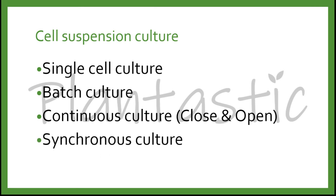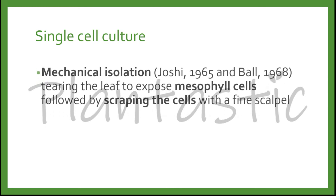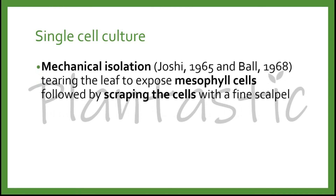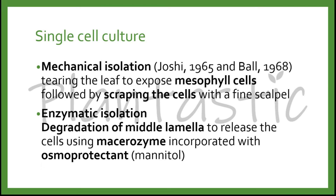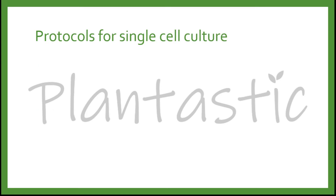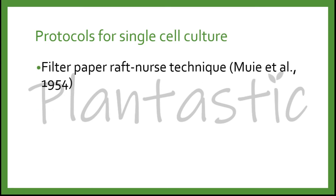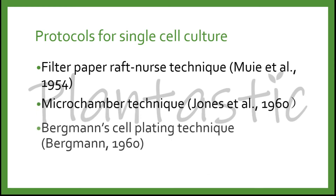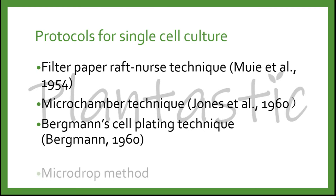For single cell culture, isolation is done mechanically by slicing the leaf to expose the mesophyll cells, followed by scraping the cells with a fine scalpel. This is followed by enzymatic isolation, in which degradation of the middle lamella occurs to release the cells using macerozyme incorporated with an osmoprotectant, which is mannitol. There are a few protocols for single cell culture: filter paper raft technique, microchamber technique, Bergmann cell plating technique, and microdrop method.